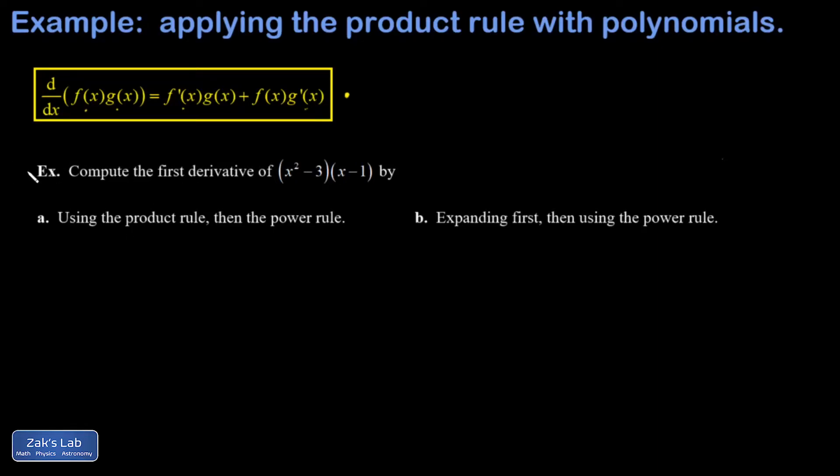So we're going to go ahead and apply this to an example where we have a product of two binomials. And I'm asked to do it in two different ways. The first way, I'm going to use the product rule and then simplify the result. And the second way, I'm going to expand by multiplying out all the terms in this before I use the power rule to finish the derivative. And we should get the same answer either way.